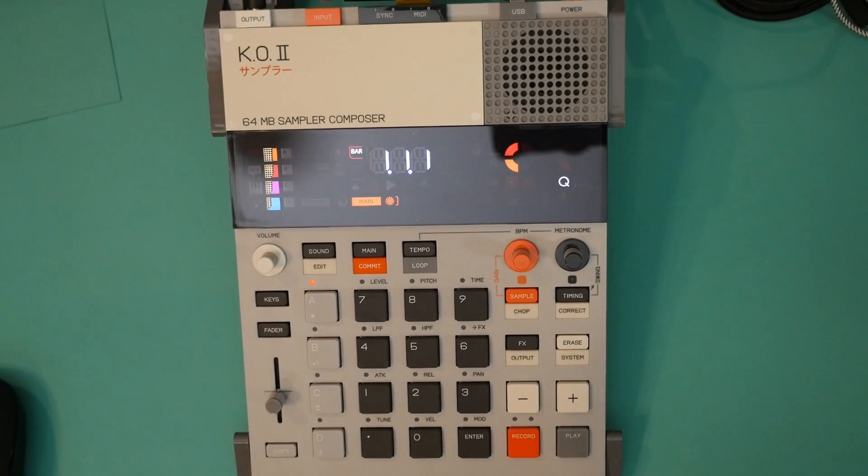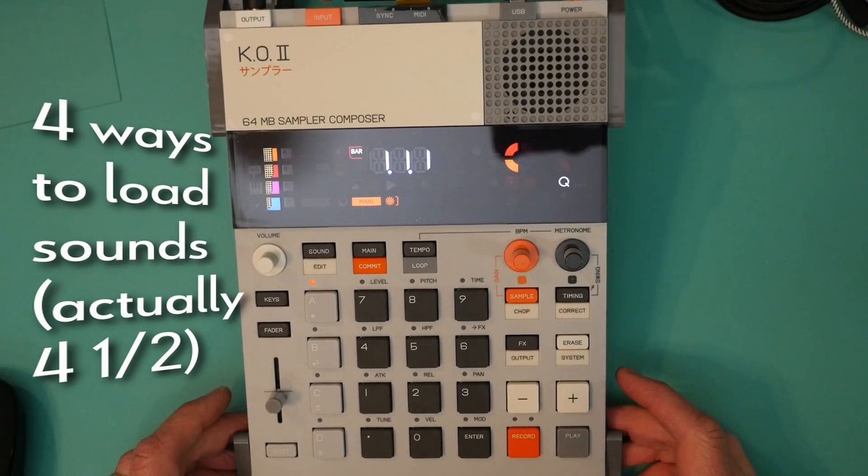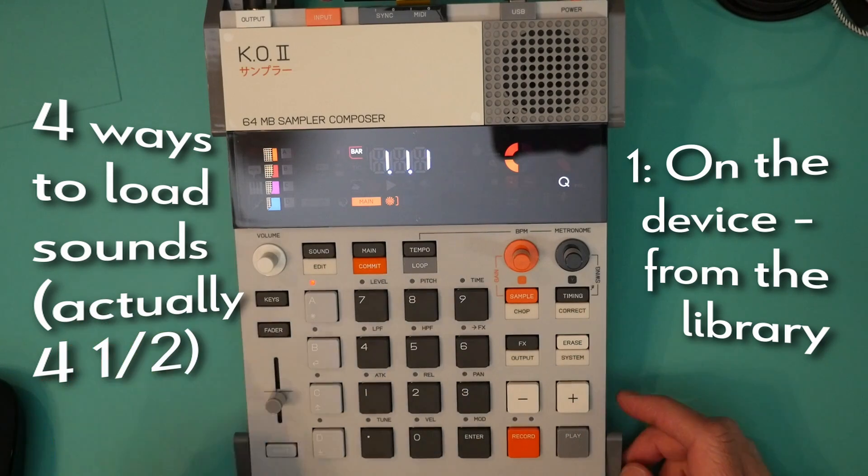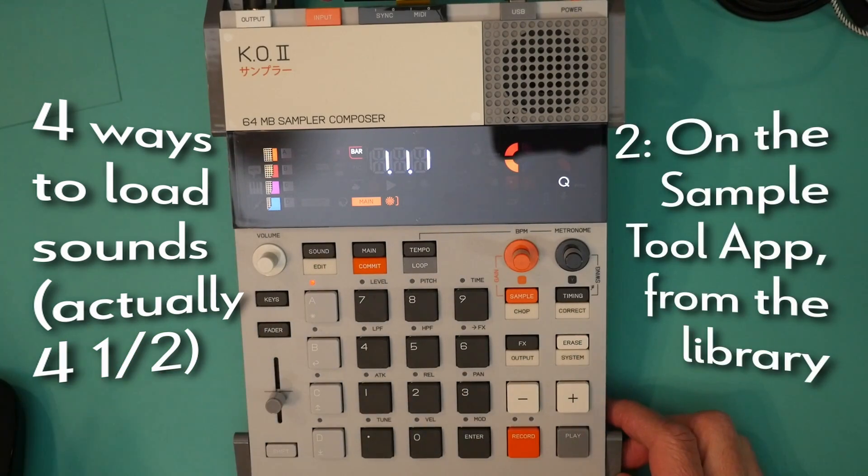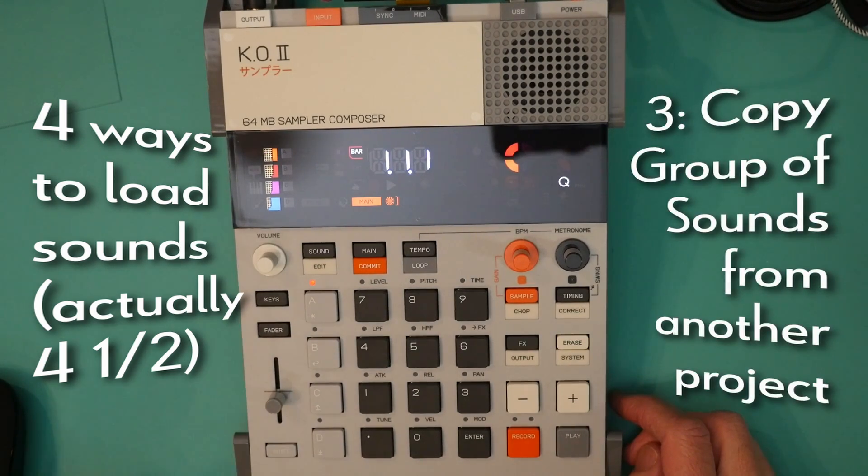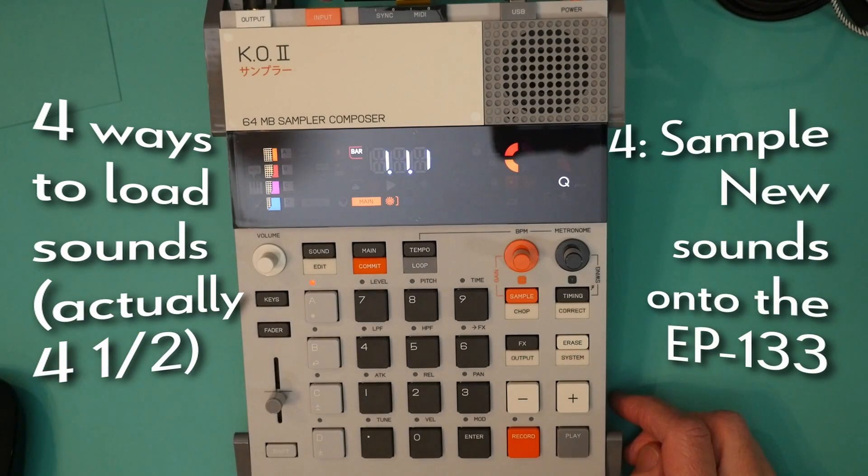There are four ways to load sounds onto the four groups of pads. First of all, on the device, either punch in the number of the sound or traverse through the library. Second is on the sample tool app, which we'll see online, which is a web-based app at the link in chapter 10.2 of the EP-133 guide. Number three is to copy the sound groups from another project, which is a great method. And number four is to sample new sounds directly onto pads.